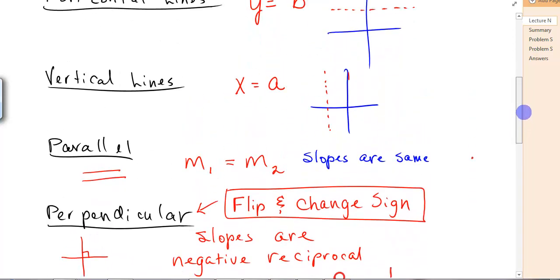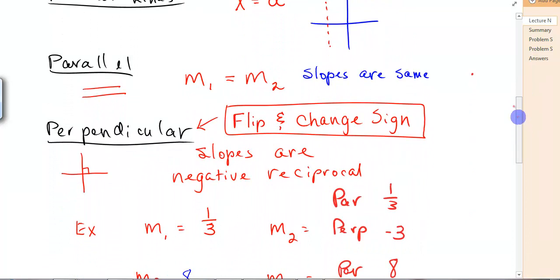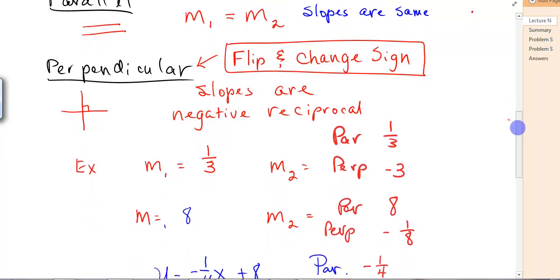The next ones that we'll look at will be parallel and perpendicular lines. For parallel lines, they go the same direction, and so their slopes are equal, m1 equals m2. Perpendicular intersect at right angles. Their slopes are negative reciprocals. You might remember this by saying flip and change the sign. Examples of that would be, if you're given that one has a slope of one-third, then the perpendicular line would be negative three over one. You flip it and change the sign. The parallel to that would be one-third, because it's the same.